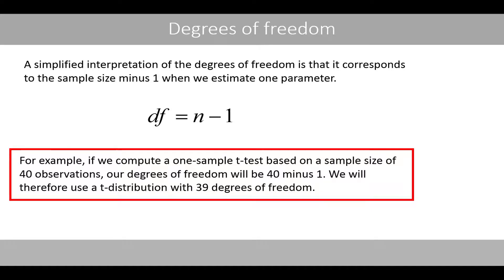For example, if we compute a one-sample t-test based on a sample size of 40 observations, our degrees of freedom will be 40 minus 1. We will therefore use a t-distribution with 39 degrees of freedom.